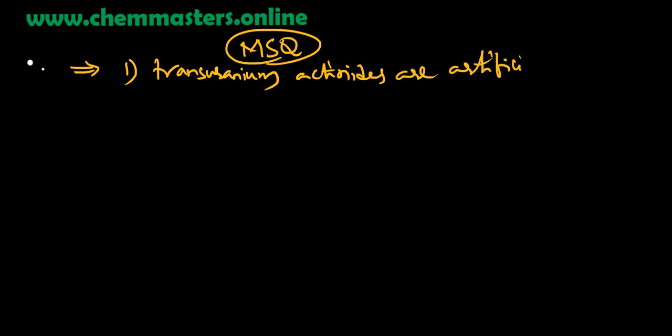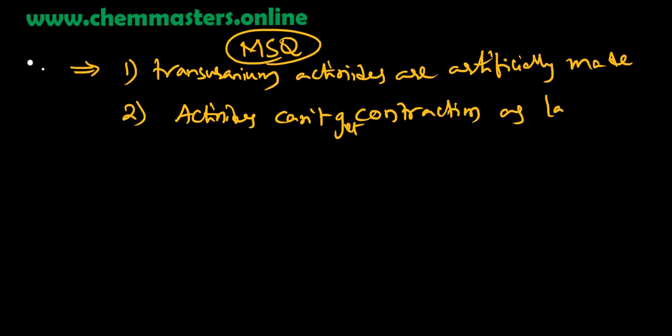The next question is on lanthanides and actinides. If you remembered any questions, you can comment and we will analyze them. We have given four statements, and this question is also MSQ - multi-selective question. Transuranium actinides are artificially made - this is the first statement. Second statement: actinides cannot get contraction like lanthanide contraction. Third one: 5f orbitals or 5f electrons of actinides are loosely bound when compared with 4f electrons.